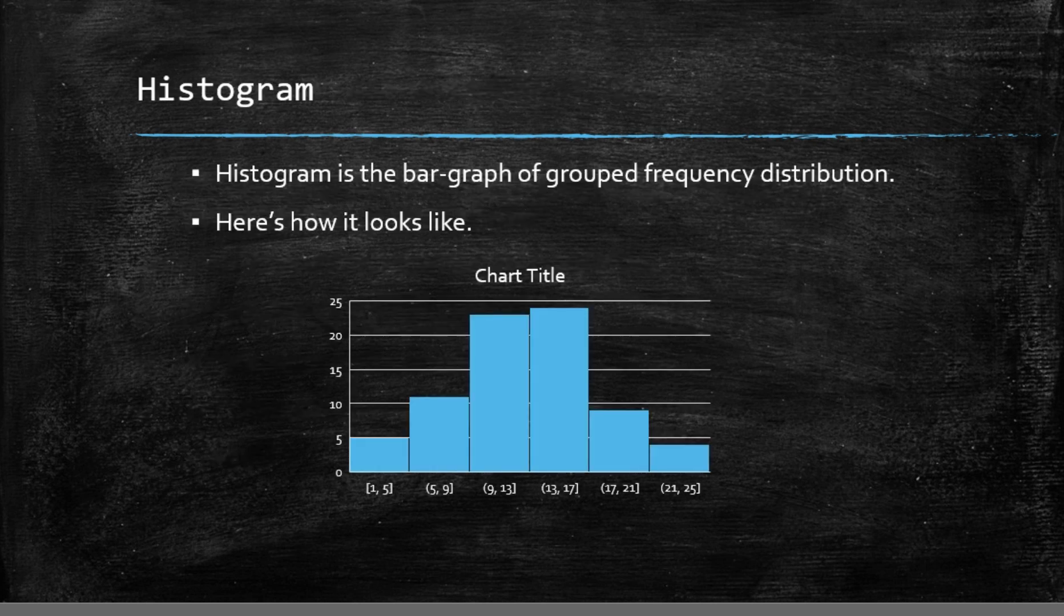Let's look at a histogram. It is basically a bar graph of frequency distribution. We will talk about bar graphs and line diagrams separately when we talk about ungrouped data and its representation. You can see how it looks like.